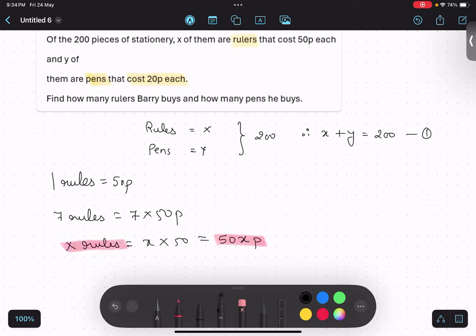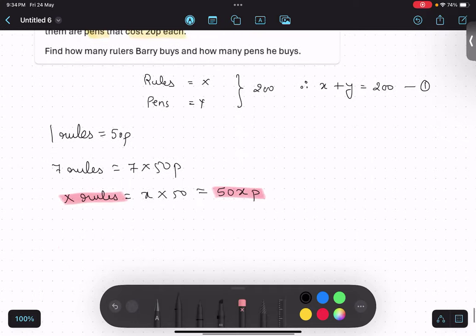This is x ruler cost. On similar note, what will be the y pens cost? Y into 20. Make sense? Yes.